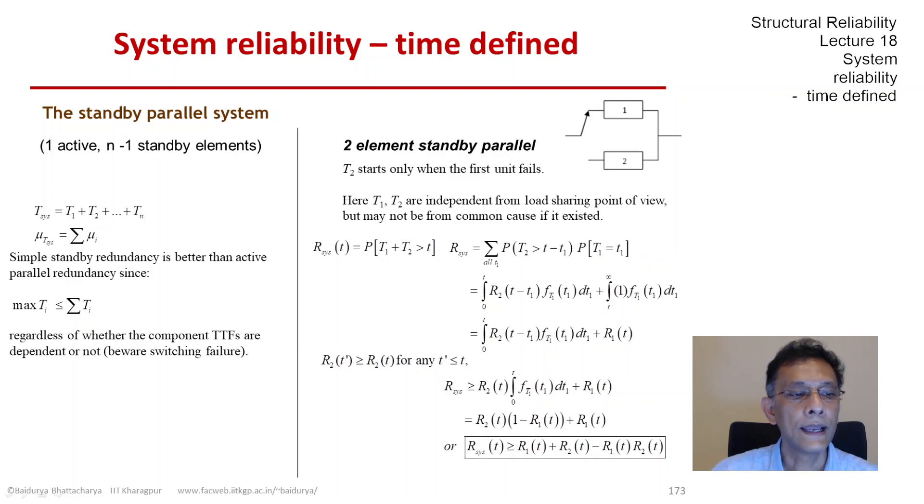Whether the t's are dependent or not, the system time to failure will always be better than if we had put all of them active together. The max t_i, which would be the time to failure for an active system, is always less than the sum of all the t's, because the max t_i is just one component in that sum. So if we can afford it with no overloading or overstressing, it obviously makes sense to